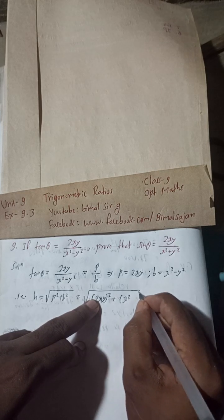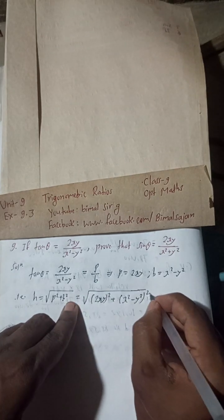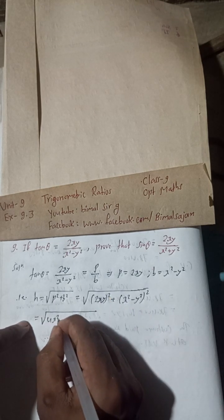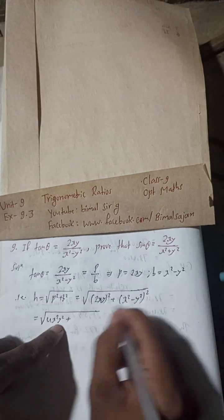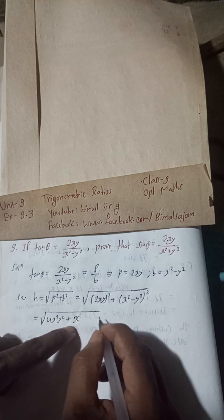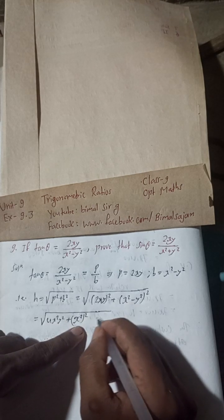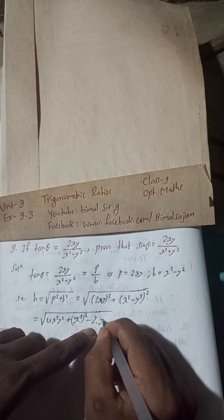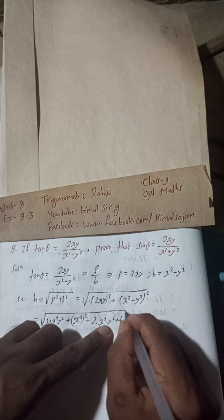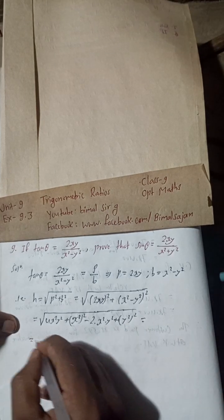Expanding: (2xy)² = 4x²y², and (x² - y²)² = x⁴ - 2x²y² + y⁴. So P² + B² = 4x²y² + x⁴ - 2x²y² + y⁴.